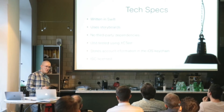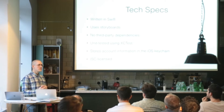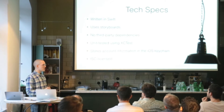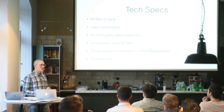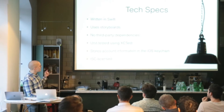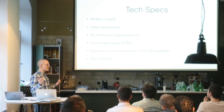A little tech specs: it's completely written in Swift. It uses storyboards — actually just one storyboard, it's very simple. It has no third-party dependencies, so it doesn't use CocoaPods or Carthage. It's unit tested using XCTest. It stores all the information in the iOS keychain; the only thing not in the keychain is the ordering of accounts, because the keychain isn't really good at ordering. It's open source and licensed under the ISC license, which is a simpler version of the BSD license — basically you can do whatever you want with it.